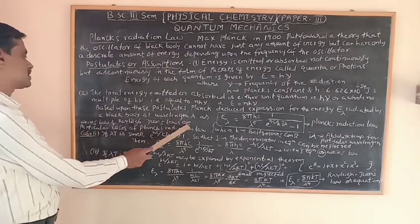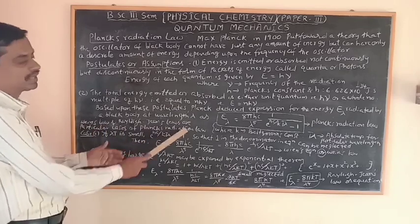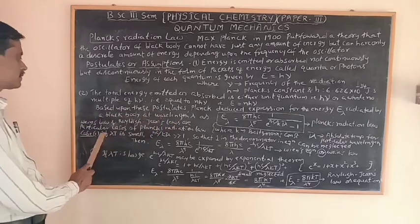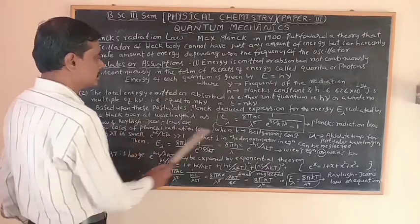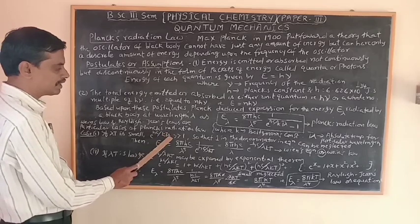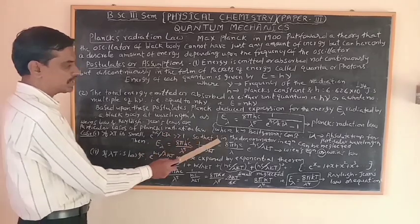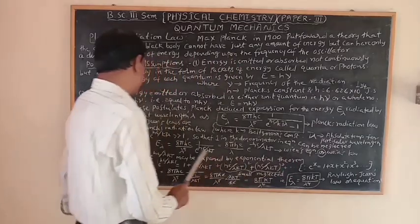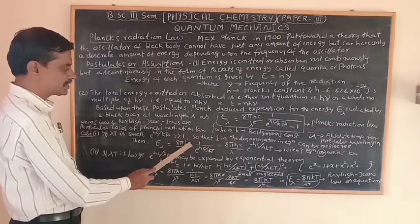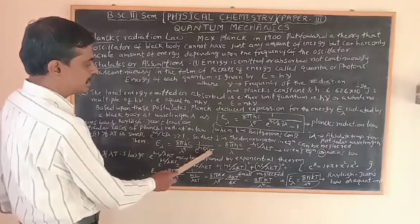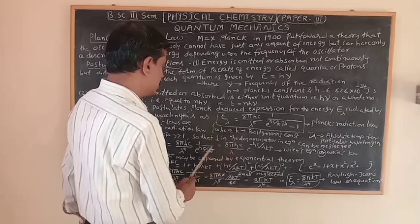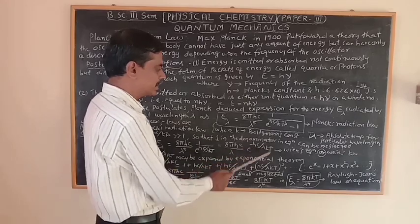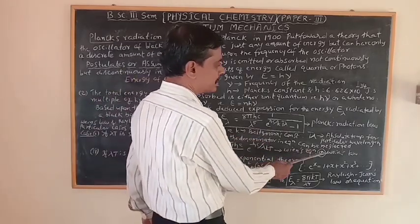Wien's law and Rayleigh-Jeans' law are particular cases of Planck's radiation law. Case 1: if λT is small, then e^(hc/λkT) is much greater than 1, so the 1 in the denominator can be neglected. The equation is then modified to E_λ = 8πhc / λ⁵ × 1 / (e^(hc/λkT)), which can be written as E_λ = 8πhc / λ⁵ × e^(−hc/λkT). This expression is called Wien's equation, or Wien's law.